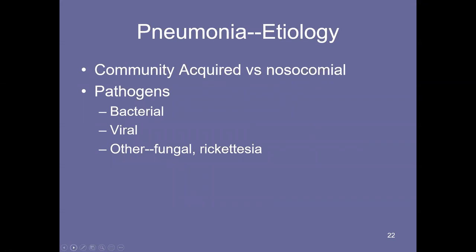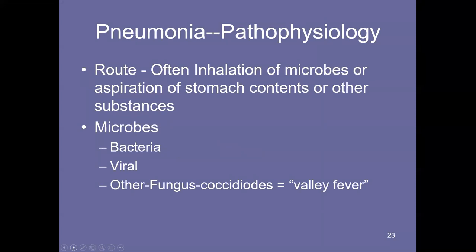Let's focus on pneumonia. Someone can have TB and pneumonia, or COVID and pneumonia, but for this presentation I'm treating them as related but separate disorders. You have community-acquired and nosocomial or hospital-acquired pneumonia. Some of the pathogens include various forms of bacteria, viral causes, and others such as fungal, Rickettsia, and protozoa. Inhalation is often the route of spreading. I'll mention a fungal infection known as Coccidioides — or valley fever.